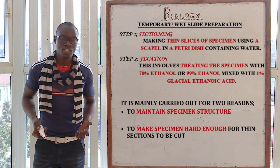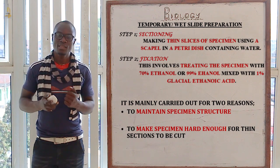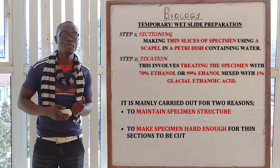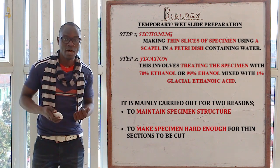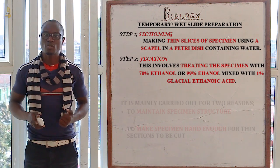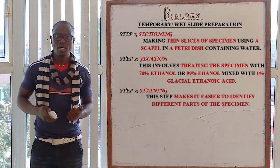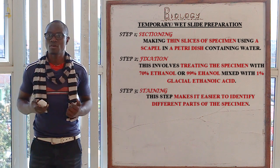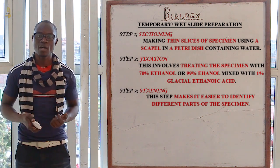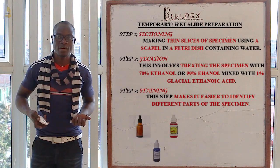The importance of fixation is that it is carried out for two reasons. The first reason is to maintain the specimen structure and also to make the specimen hard enough for very thin sections to be cut. The third step is called staining, whereby this makes it easier to identify different parts of the specimen.